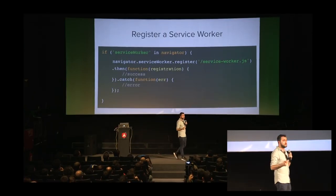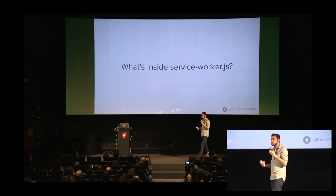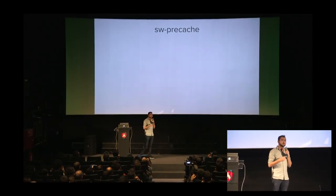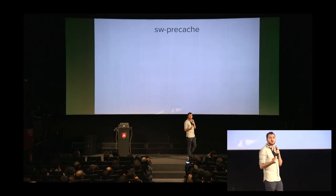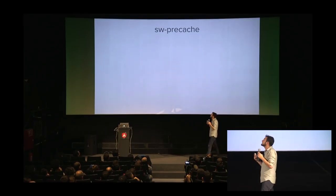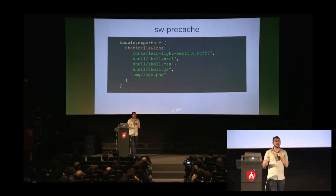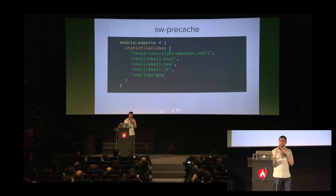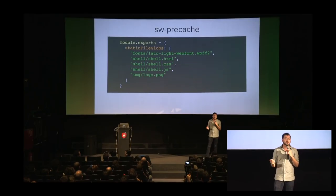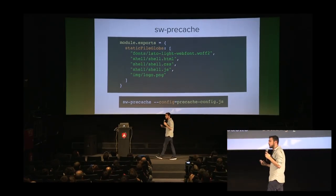The register call is a regular promise, so you can resolve it, check if it was successful, or catch errors. You can write your own Service Worker, but it can be tedious — for production, it's better to use tools like sw-precache. Sw-precache is a Node module by the Google Chrome team. You install it via npm, create a configuration file, specify the files you want to precache — like fonts, shell.html, shell.css, shell.js, and your logo.